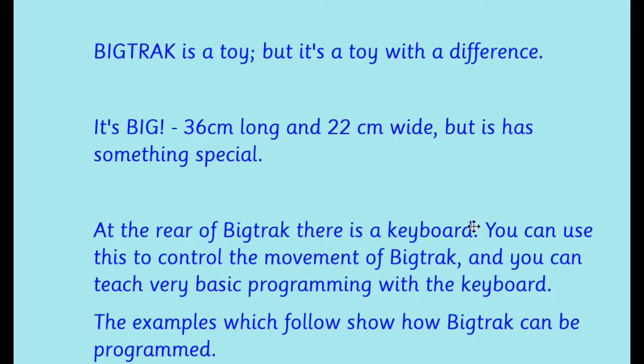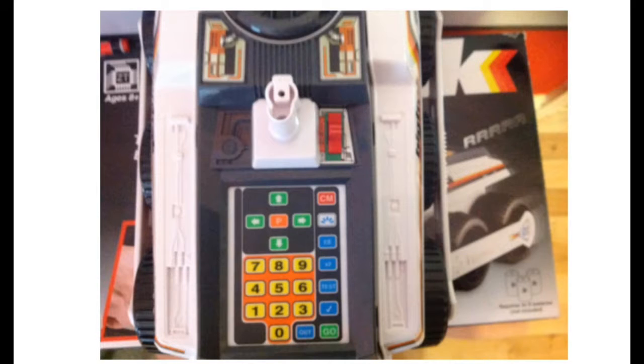The examples which follow will show how Big Track can be programmed. This shows the keypad at the back of Big Track. There are arrows going up, down, right, and left, and numbers. The arrows mean forward, backwards, right, and left, and the numbers for forward and backwards indicate the number of tank lengths to go forward or backwards.